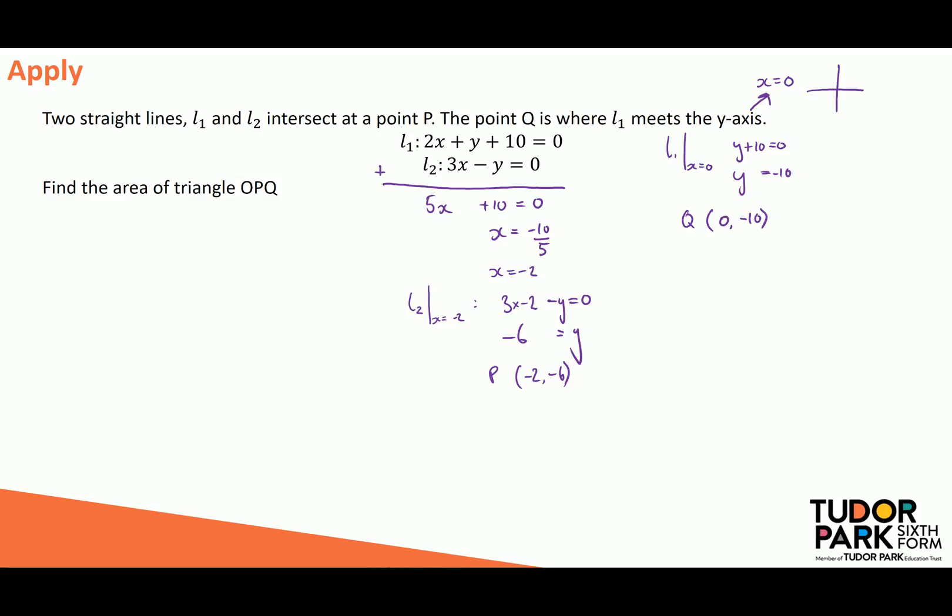I'm wanting to find the area of triangle OPQ. Now, O we haven't been given as a point, but our assumption here is that O means the origin. So let's think about what this might look like as a little sketch. So here's a little coordinate system. I've got the origin here at O. I've got my point Q, which was at 0, negative 10, so that's down here, Q.